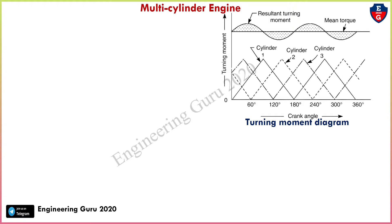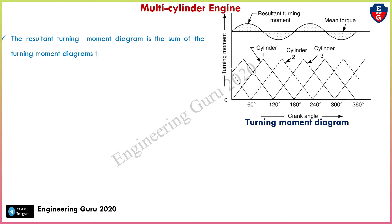Here is the schematic diagram of turning moment diagram for a multi-cylinder engine. Now let's understand how we can draw this type of turning moment diagram and what type of concept we will use. The resultant turning moment diagram is the sum of turning moment diagrams for three cylinders.